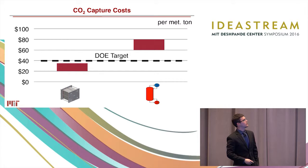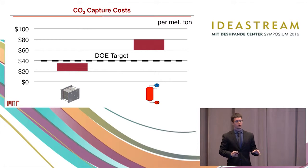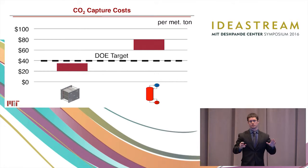So all told the economics come out to about this. The incumbent technology, this thermal swing amine technology, costs about sixty to eighty dollars per metric ton CO2 captured, whereas our technology, this EMAR based technology, will run about twenty to thirty five dollars per metric ton of CO2 captured. That's below the DOE's established targets for CO2 capture.